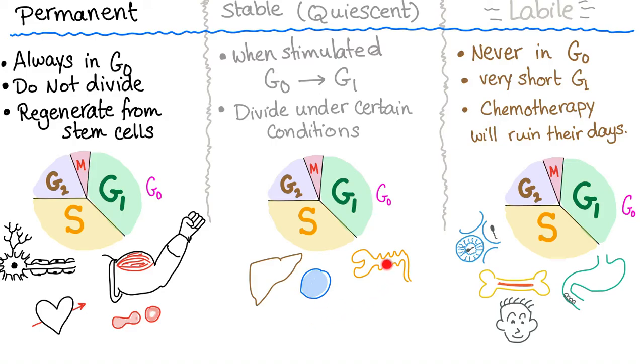What else? Lymphocytes and proximal convoluted tubules are also examples of stable cells.